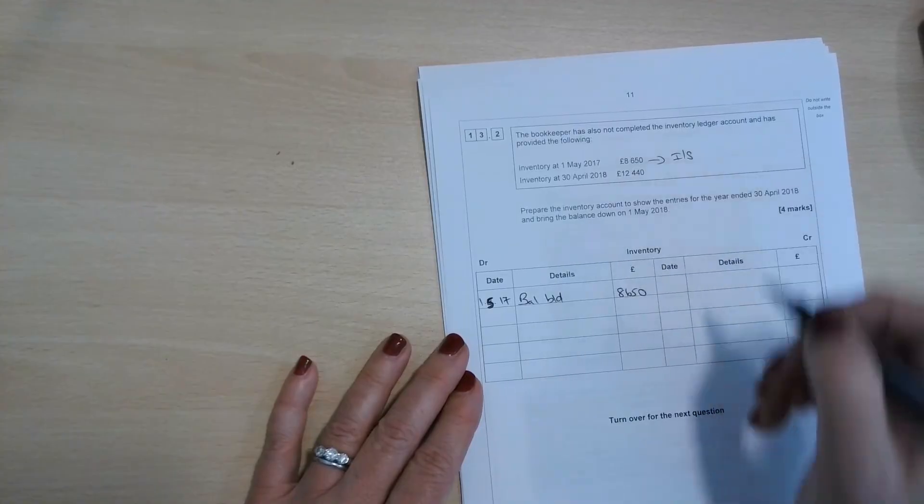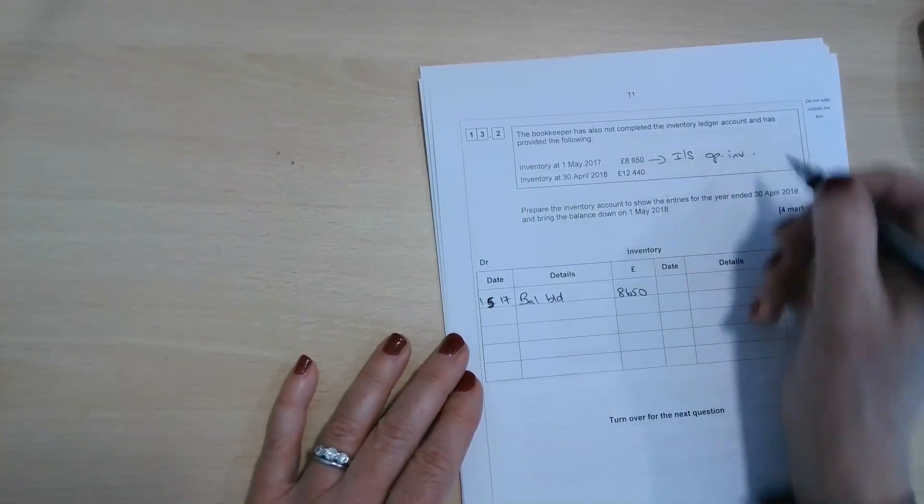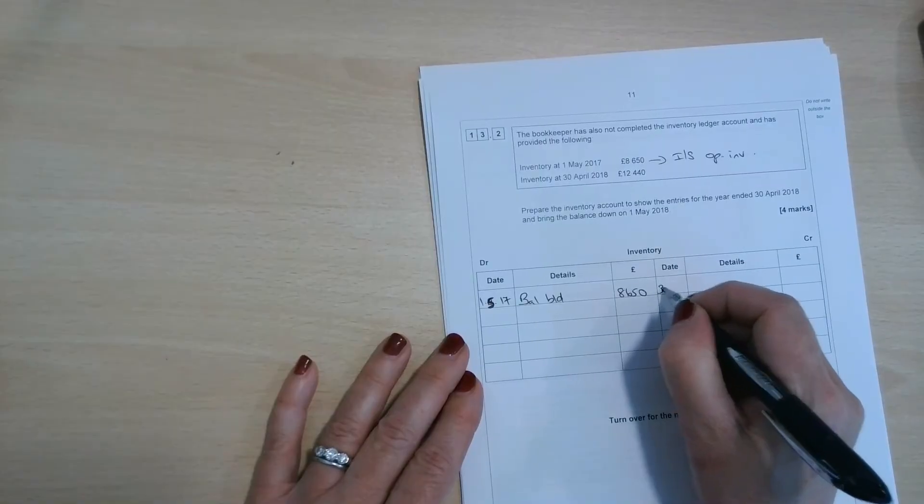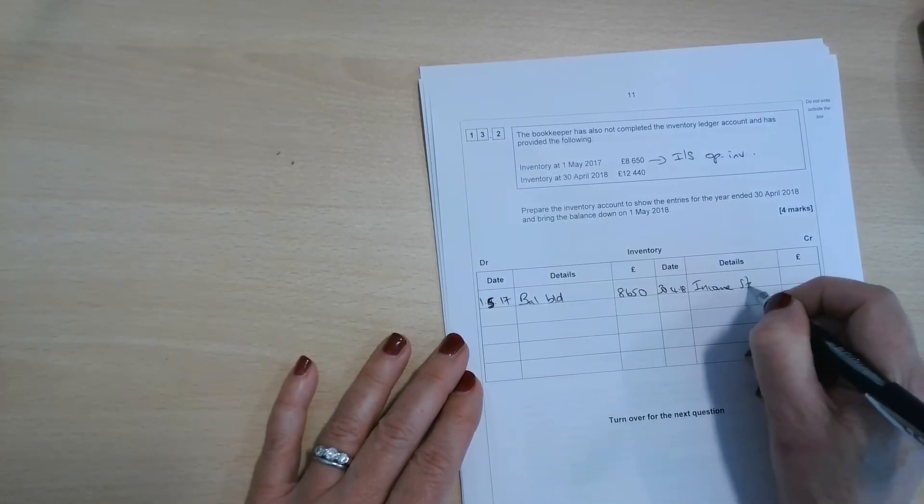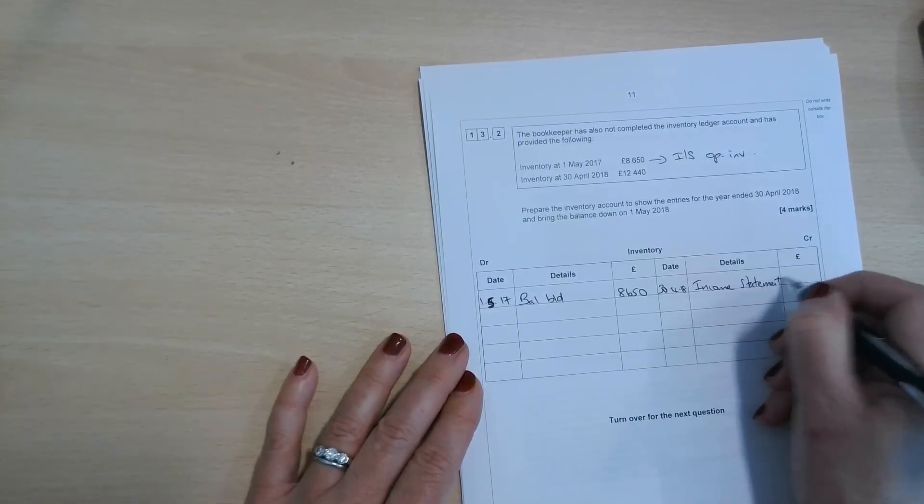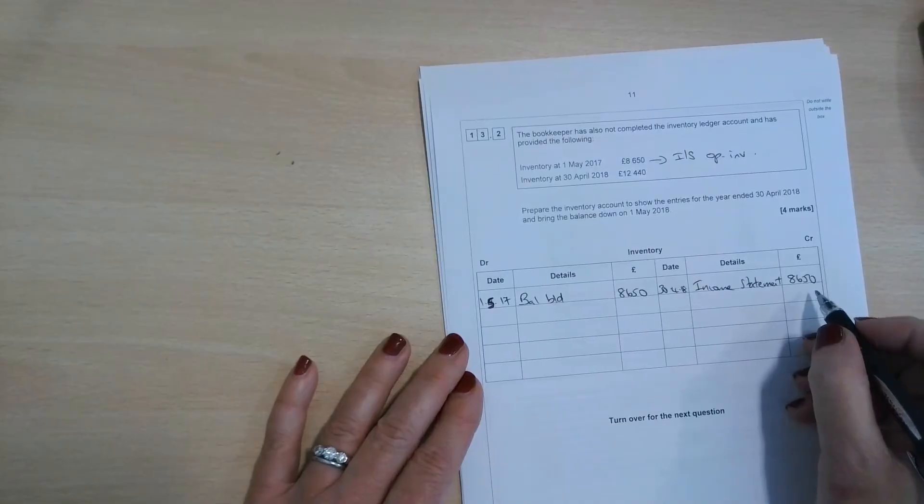Now, that's going to be transferred to the income statement as a debit balance. That's going to be opening inventory. So when we get to the end of the year, 30th of April 2018, off to the income statement, the opening inventory there, £8,650. So that's wiped out the opening inventory.